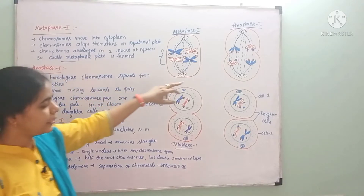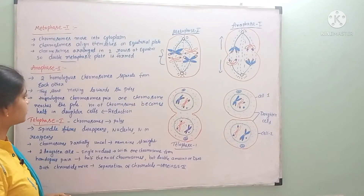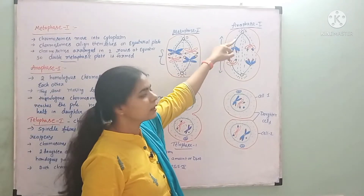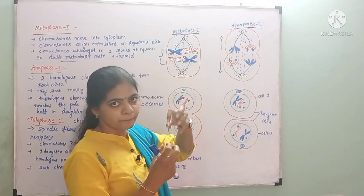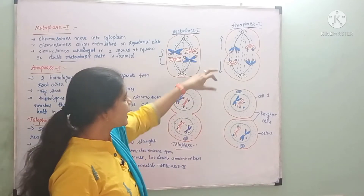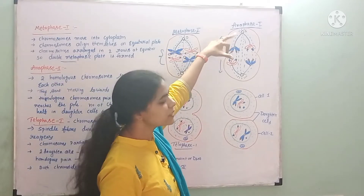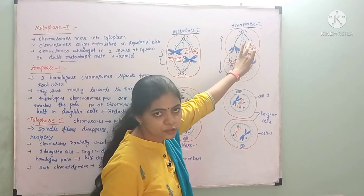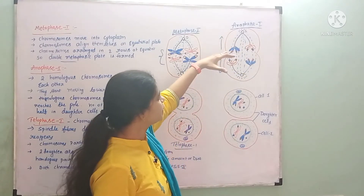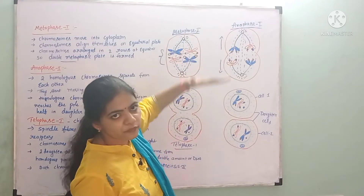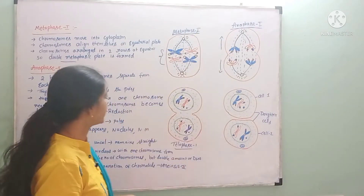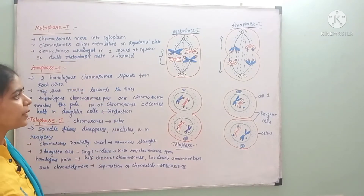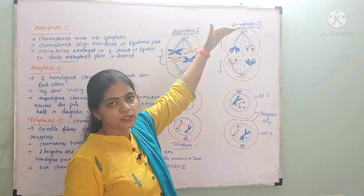Next, the cell is in anaphase 1. In anaphase 1, the spindle fibers pull the chromosomes. The spindle fibers pull through the homologous chromosome pairs, pulling each chromosome in a pair to the opposite poles.